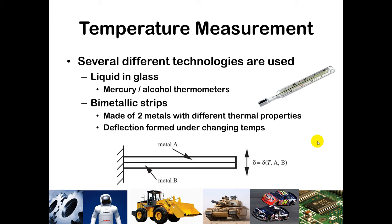Temperature measurement is done in many different ways. Most of us have had our temperature measured with a liquid-in-glass thermometer. Those liquids used to be mercury, but since mercury is harmful, many have switched to certain types of alcohol that expand at different temperatures. You see that metallic-colored liquid rise inside the glass to show the temperature.